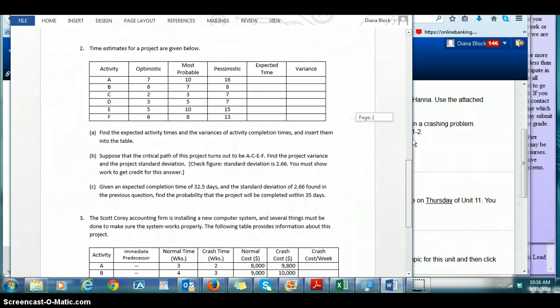And then on the second problem here, you're going to use the formulas that are in chapter 11 to calculate the expected time. Then you'll use the formula to calculate variance for each of these activities. So you'll have your expected time and your variance. And that's what you're going to enter for part A. You're going to enter the variance and the standard deviation. All those formulas are available for you.